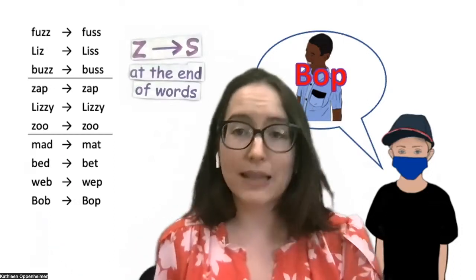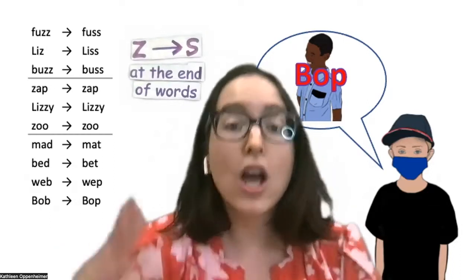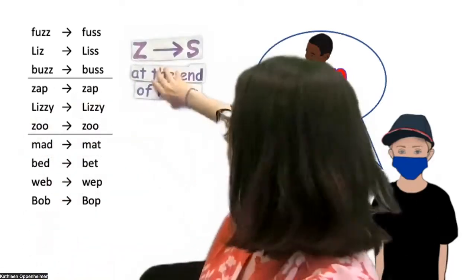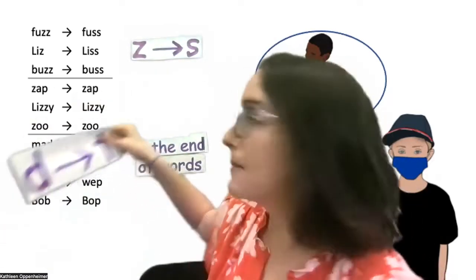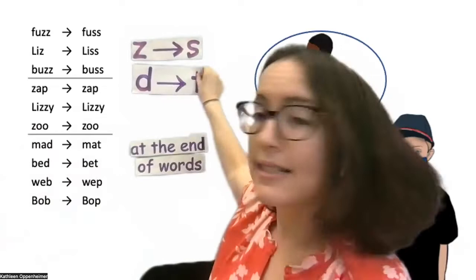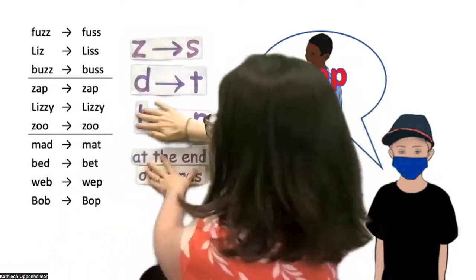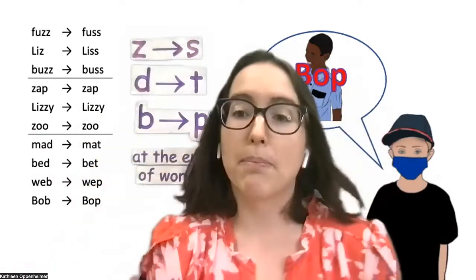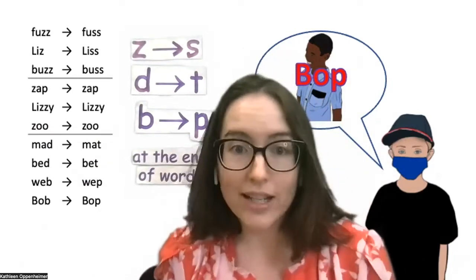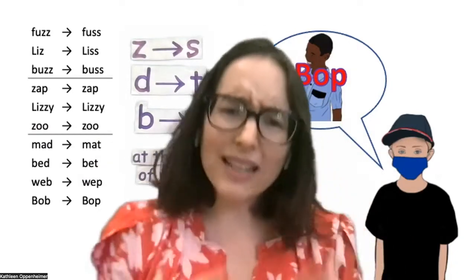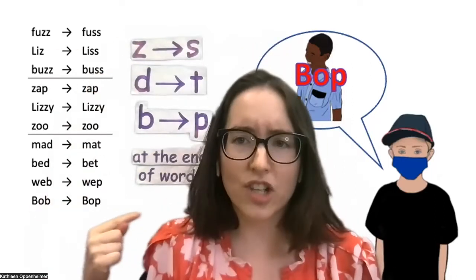So then we talk about the patterns again. And usually at this point the kids have come up with three patterns that they observe: Z turns into S, D turns into T, and B turns into P — but only at the ends of words. So this is a great start, I tell them, but we want to find one pattern that describes all three of these changes.